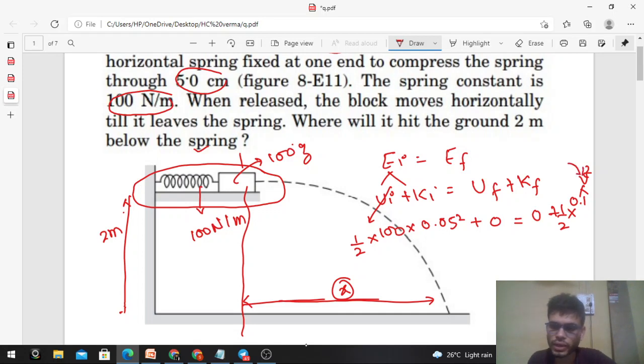The speed of the block will be v, so you have to find out the value of v. From here, half cancels, 0.1 becomes 1000, into 0.05 - that's 25 upon 10 to the power 4, so that's 2.5. The root is under root 2.5. This is the speed with which the block will lose contact with the spring.